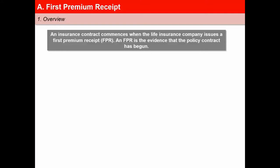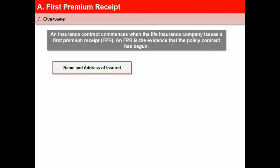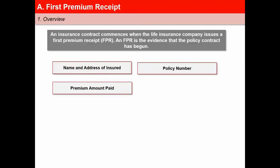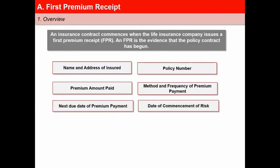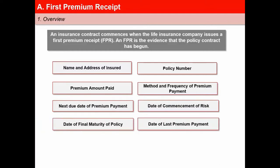The first premium receipt contains the following information: name and address of the life assured, policy number, premium amount paid, method and frequency of premium payment, next due date of premium payment, date of commencement of the risk, date of final maturity of the policy, date of payment of the last premium, and sum assured.